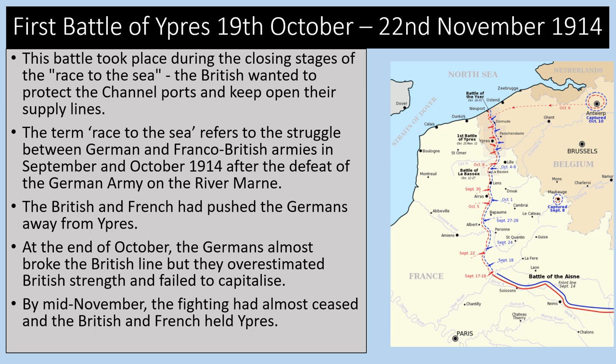The First Battle of Ypres was from October to November 1914, taking place during the closing stages of the Race to the Sea. The British wanted to protect channel ports and keep open their supply lines. After the defeat of the German army on the River Marne, the British and French had pushed the Germans away from Ypres. At the end of October the Germans almost broke the British line but overestimated British strength. By mid-November, fighting had almost ceased and the British and French held Ypres as a vital strategic location.